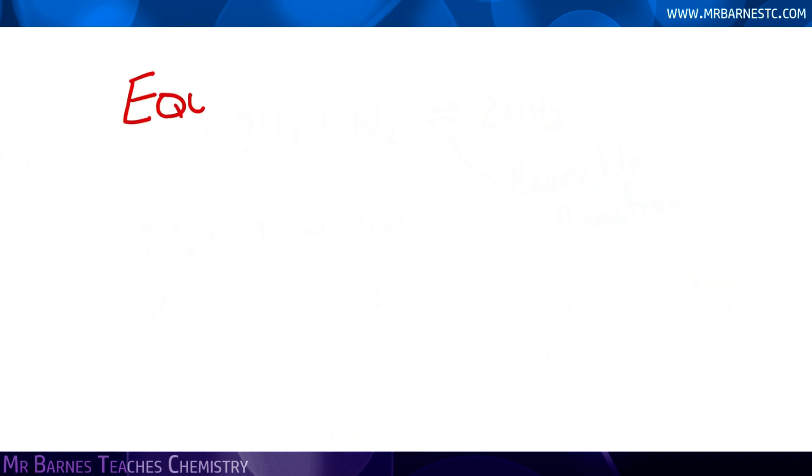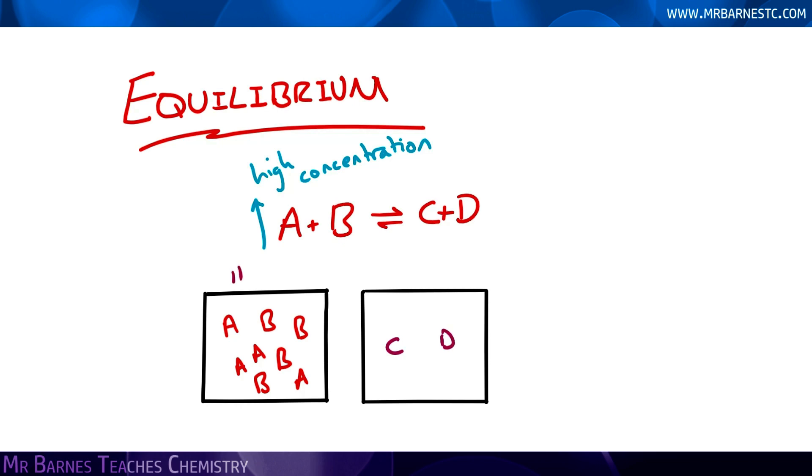What we next need to talk about is what equilibrium is. So if I show you a generic example where A plus B goes to C and D, A and B will start off in high concentration, they will react together. As they form C and D, the concentration of the products will go up and the concentration of the reactants will go down.